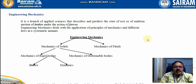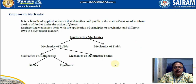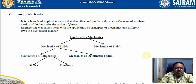Engineering mechanics is mainly classified into mechanics of solids and mechanics of fluids. We are not dealing with fluid mechanics, as that is out of scope. Solid mechanics is subclassified into mechanics of rigid bodies and mechanics of deformable bodies — we are not studying deformable bodies now, only rigid bodies. Mechanics of rigid bodies is further subclassified into statics, which deals with bodies in the state of rest, and dynamics, which deals with bodies in the state of motion.